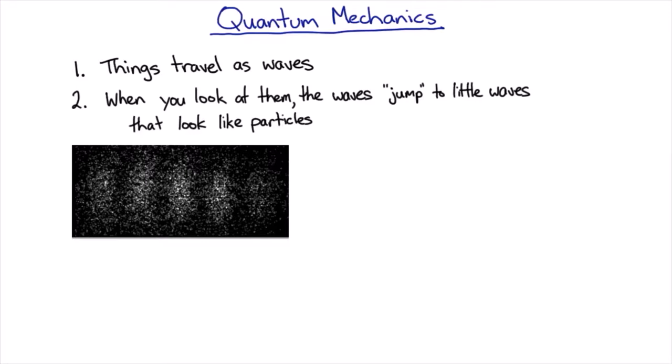And in fact, two-slit interference has been performed on molecules containing almost a thousand atoms. So if quantum mechanics really applies to everything, big and small, then the real question shouldn't be, well in that case, why is the theory so weird?